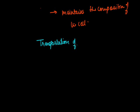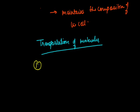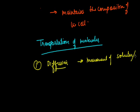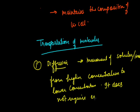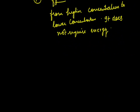Transportation of molecules across the membrane is done by two methods. The first is diffusion — the movement of solutes or ions from higher concentration to lower concentration. It does not require energy, so it is called passive transport.